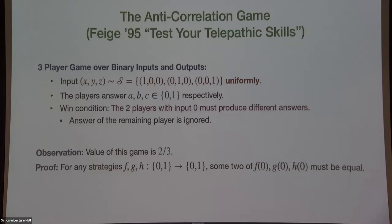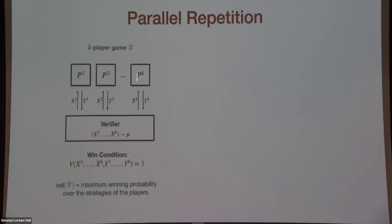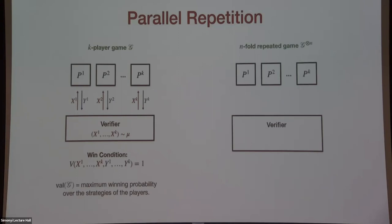When games have value less than one, in many applications it is important to reduce this value. One natural approach is parallel repetition, which should allow us to reduce the value while preserving the number of rounds to just one. Given a K-player game G, we define the n-fold repeated game, denoted G to the n.